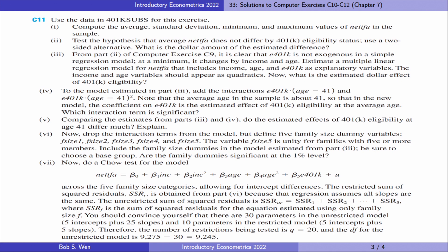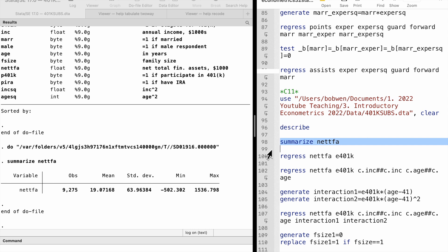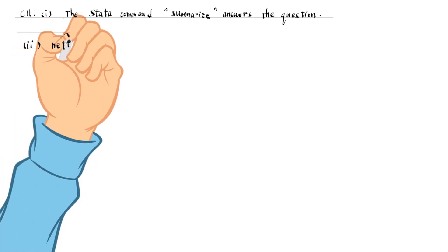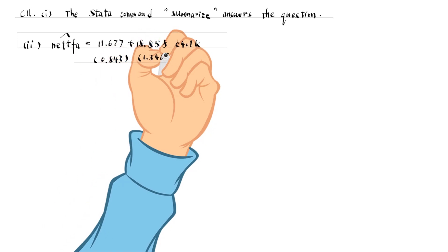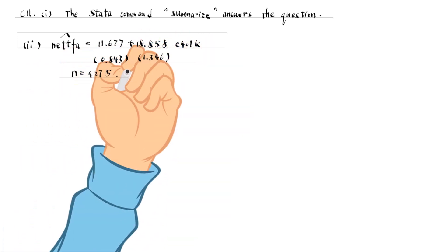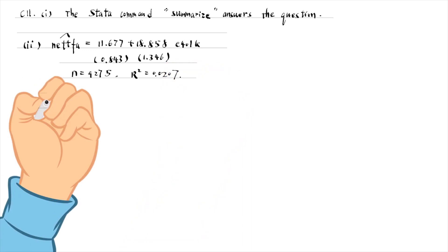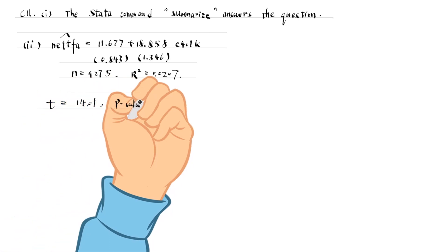Let's solve computer exercise 11. The summarize command answers the first question. For part 2, we run the simple regression model. Households eligible for 401(k) are estimated to have $18,858 more financial assets than those not eligible for the plan.